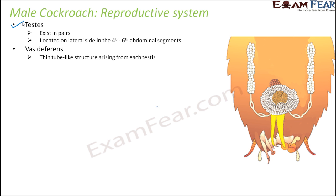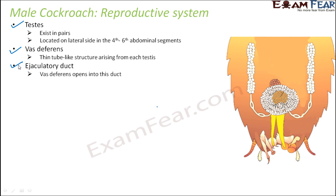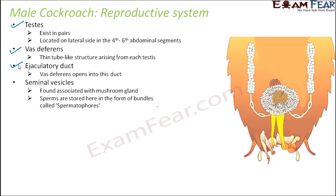Next is the vas deferens — thin tube-like structures arising from each testis that carry the sperms produced by the testes. These organs are common to many organisms; in human beings too the male reproductive system has testes and vas deferens. The vas deferens opens into the ejaculatory duct, which is a thicker duct structure into which the smaller ducts open together.